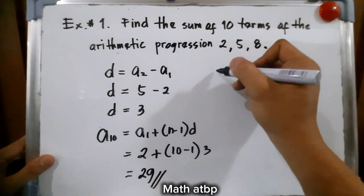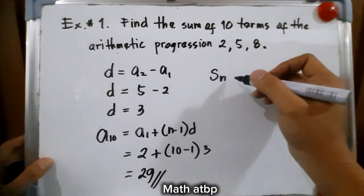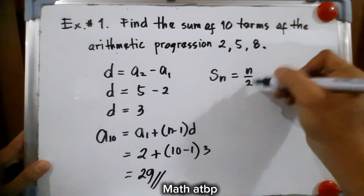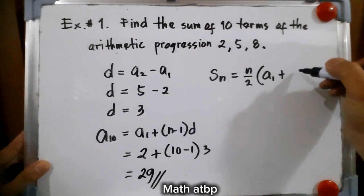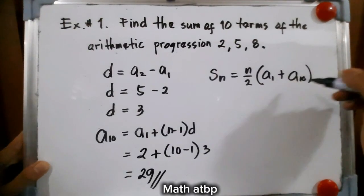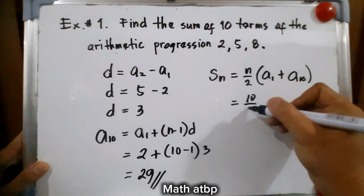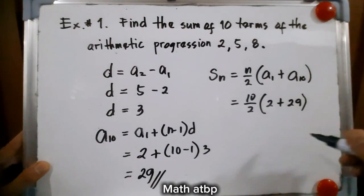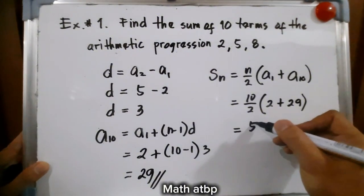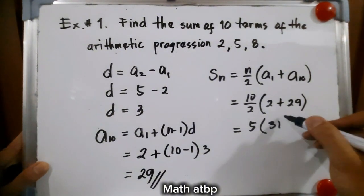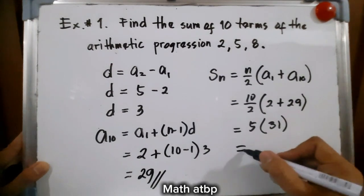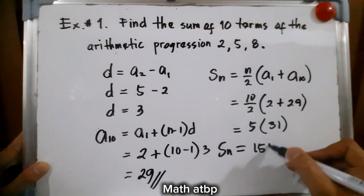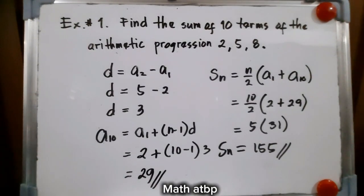Substituting that to our formula, s sub n, or the sum of the 10 terms, is equal to n over 2 times the quantity a sub 1 plus a sub n, which is 10. So we have 10 over 2 times 2 plus 29, and that is 5 times 31. The sum of 10 terms is equal to 155. That is the answer.